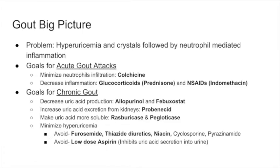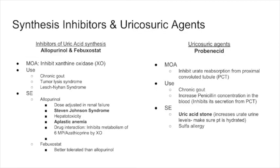Now for the nitty-gritty details. The first drugs are the inhibitors of uric acid synthesis: allopurinol and febuxostat. They inhibit xanthine oxidase — the enzyme that oxidizes xanthine into uric acid in the purine salvage pathway. These drugs are used for chronic gout and also for tumor lysis syndrome, where there is massive purine breakdown and uric acid buildup.